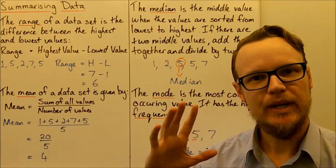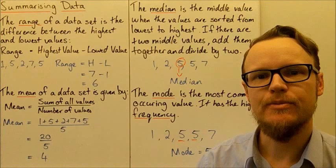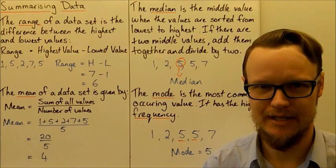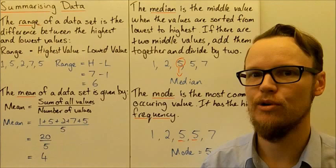Today we're going to look at summarising data. When we're looking at a whole lot of different values that we've collected from surveying or looking at data that someone else has collected, we can use some values to give us an idea about the general patterns in the data. That's how we summarise data — we get different pieces of information that tell us a little bit about the data without us having to look at the whole lot of numbers.